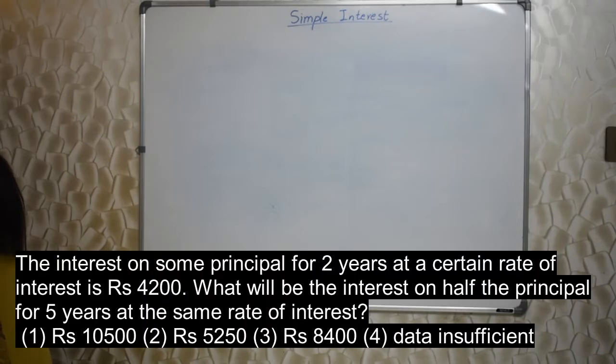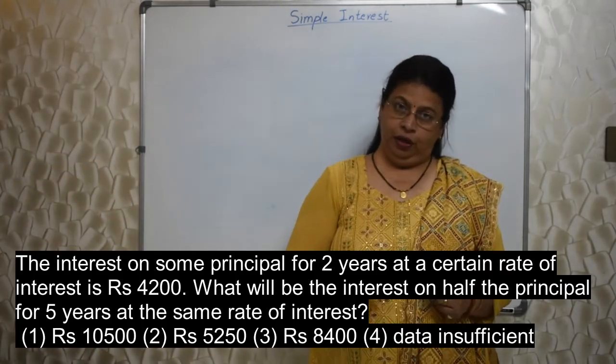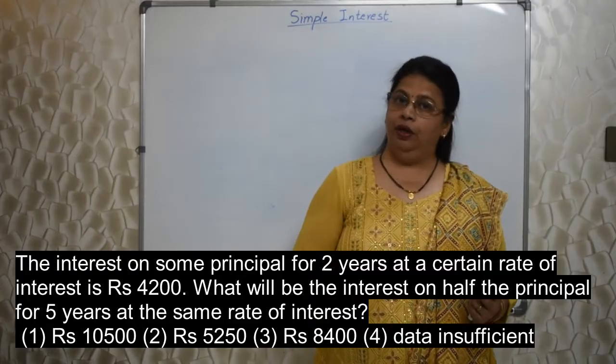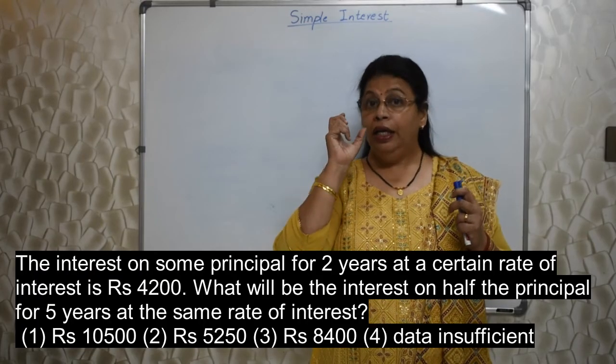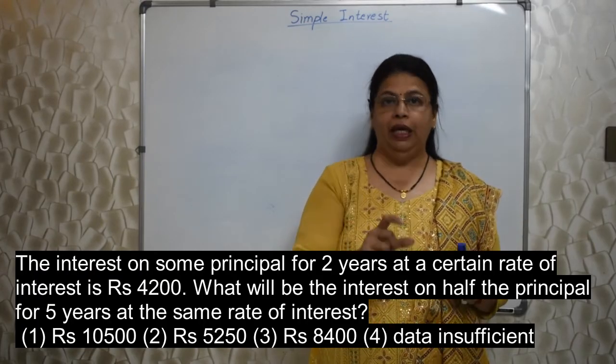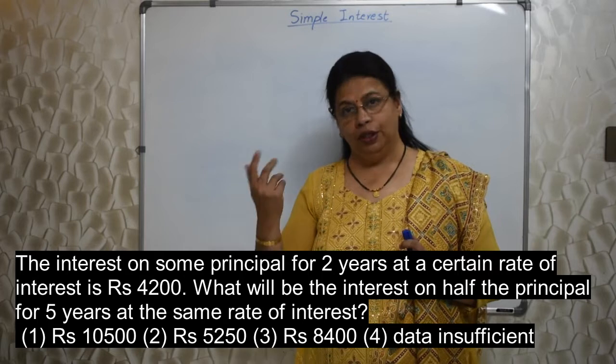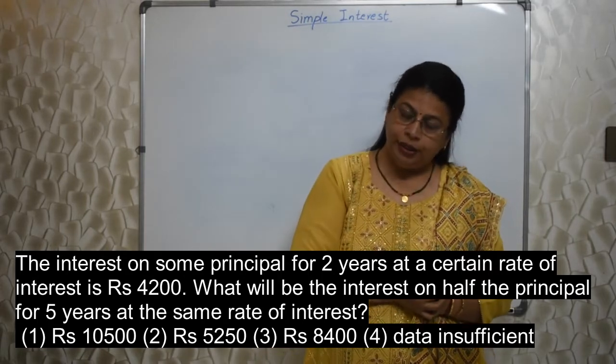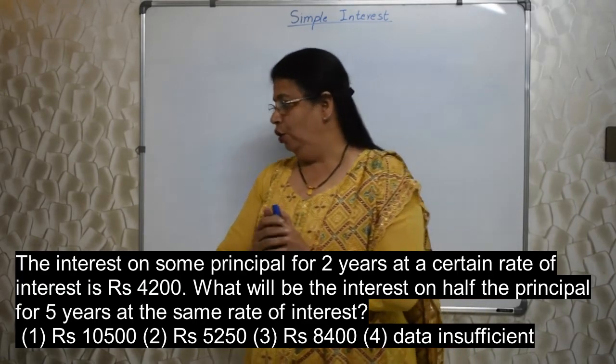The interest on some principal for 2 years at a certain rate of interest is Rs 4,200. What will be the interest on half the principal for 5 years at the same rate of interest? See students, here interest is given. But principal is not given, rate is not given. Certain rate, same principal. Like that. Nothing in numerical form is given. No value of P or R is given. Only thing is interest is given and number of years is given. In this kind of sum students, you have to just use unitary method.